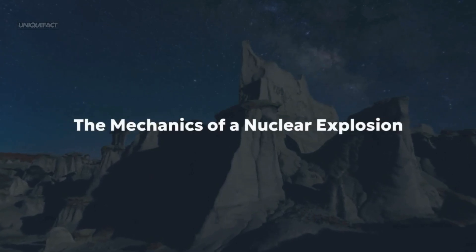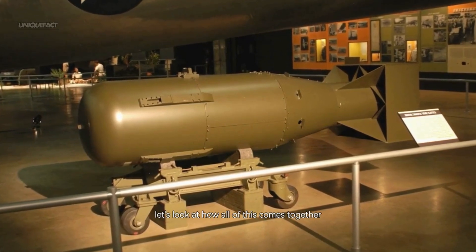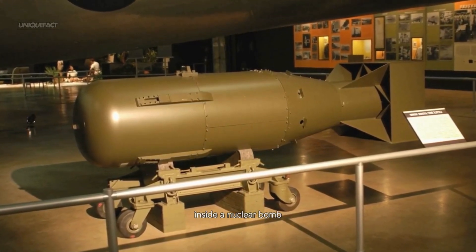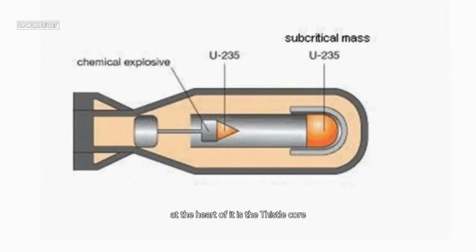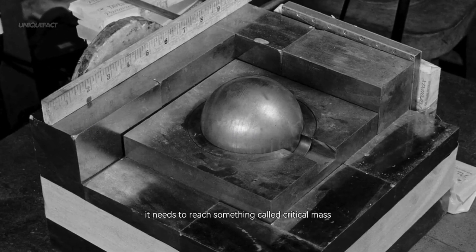The mechanics of a nuclear explosion. Now that we understand fission and chain reactions, let's look at how all of this comes together inside a nuclear bomb. At the heart of it is the fissile core, usually made of uranium-235 or plutonium-239. But just having the material isn't enough. It needs to reach something called critical mass.